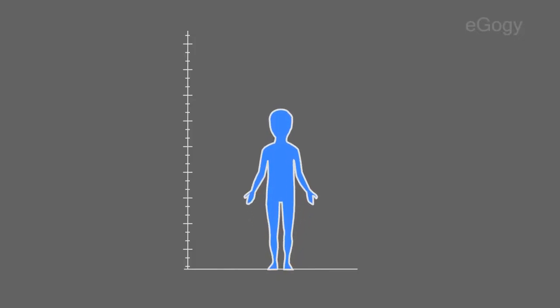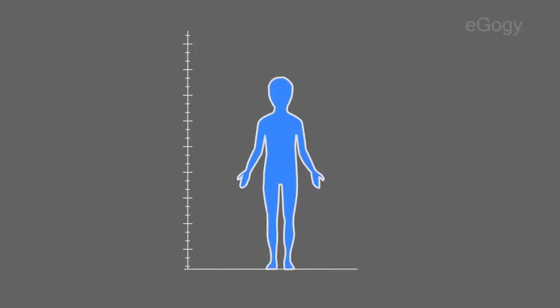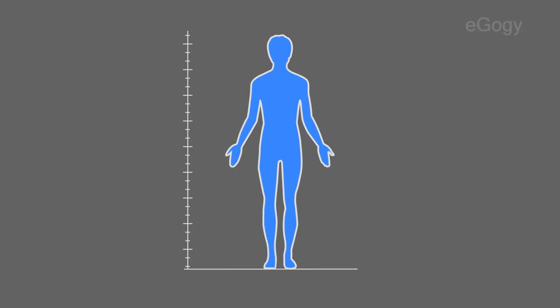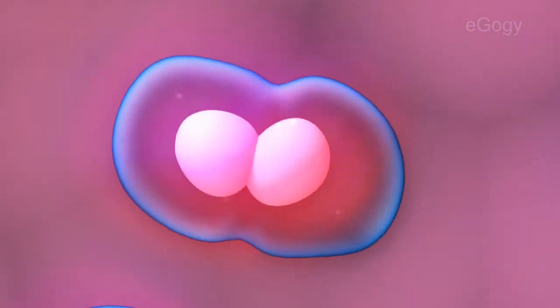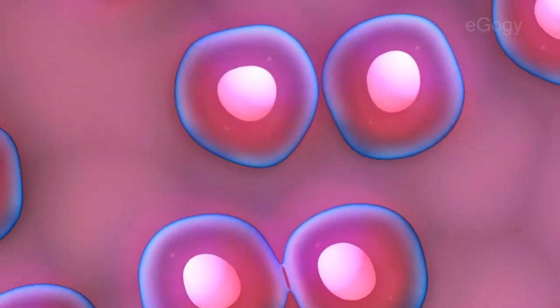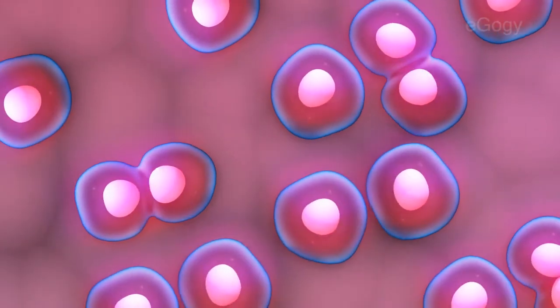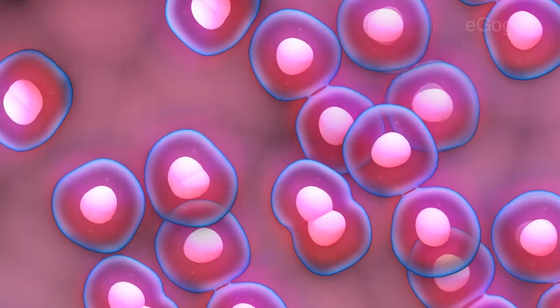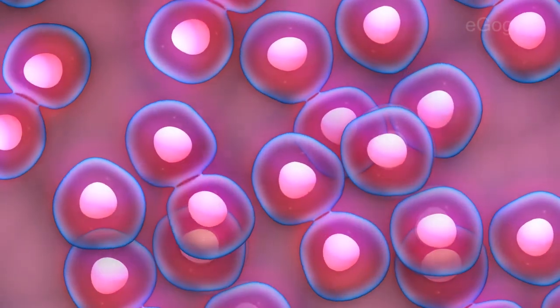The growth and development of our body is dependent on the division of cells. Genes in the chromosomes control all the activities of the cells.